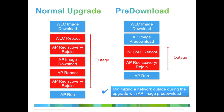Then the AP will reboot and go into the rediscovery and re-join process again. Then it will join the controller, download the configuration, and start to provide wireless service. The portion highlighted in red in this graph represents the network outage caused by this upgrade process.